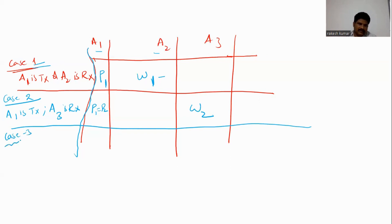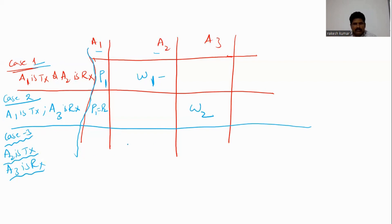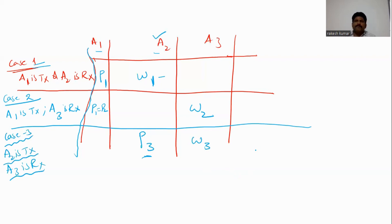In Case 3, antenna A2 is the transmitting antenna and antenna A3 is the receiving antenna. P3 denotes the amount of power radiated by antenna A2, and W3 denotes the amount of power received by receiving antenna A3.